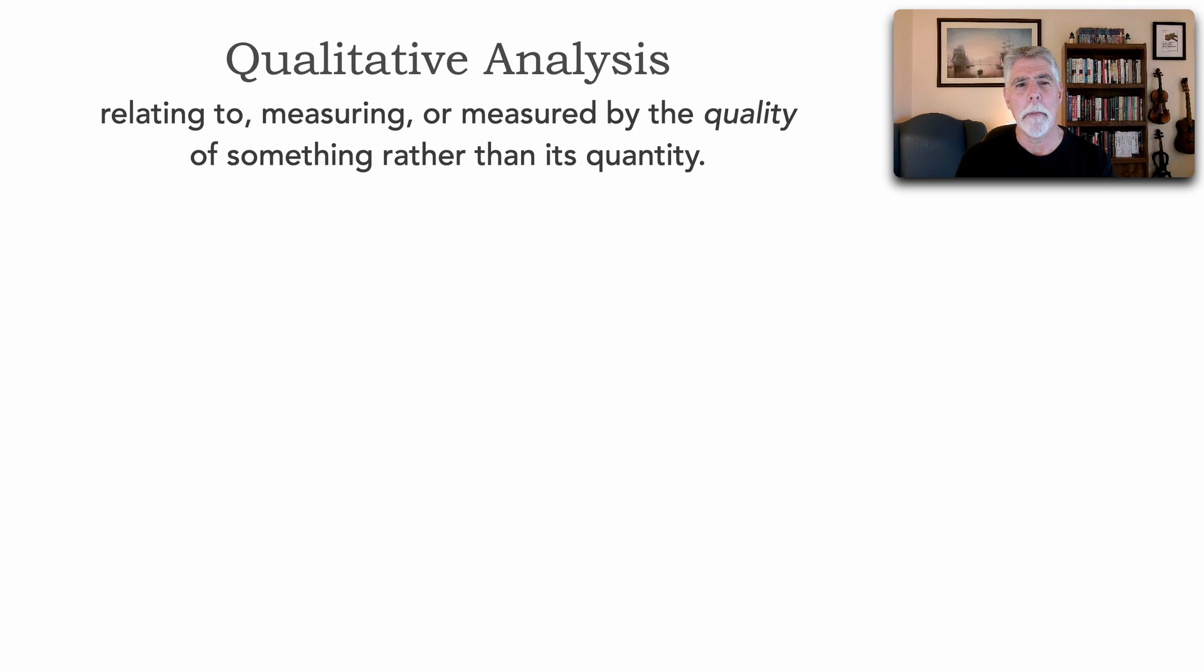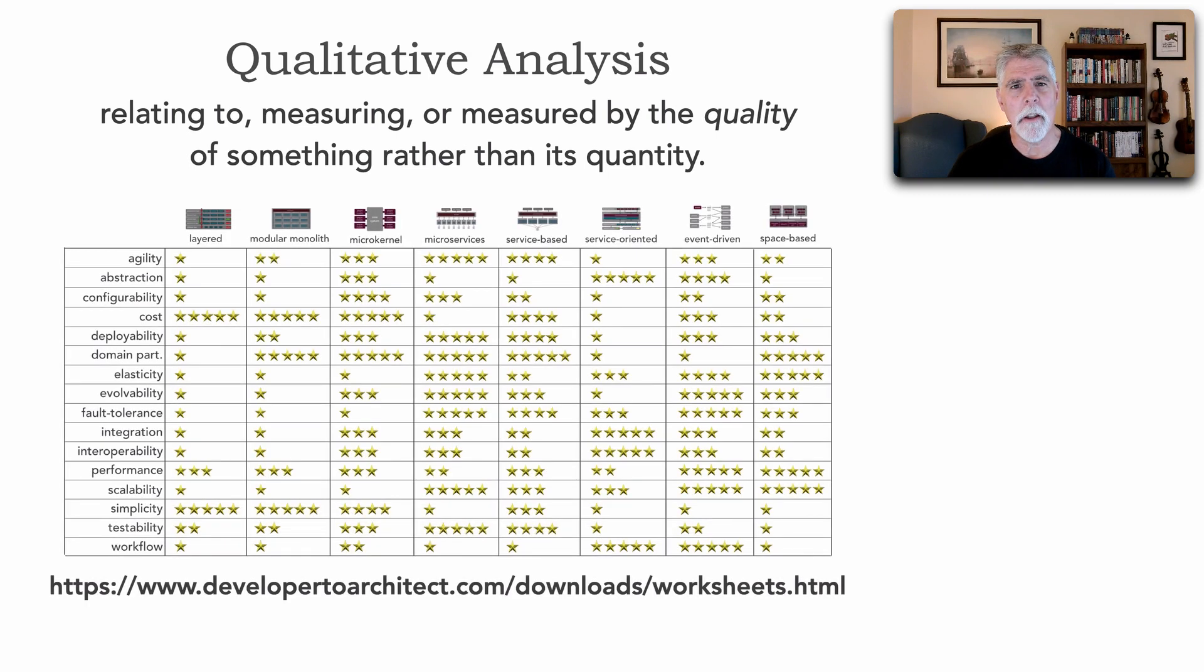Let's solve our scalability problem by using qualitative analysis now instead of quantitative. Remember, qualitative analysis is relating to measuring or measured by the quality of something rather than its quantity. A really good example is the star rating chart that Neil Ford and I created in our book Fundamentals of Software Architecture. You can see and download this star rating chart from my website developer2architect.com/downloads/worksheets.html, and the link is also in the landing page for this lesson as well.